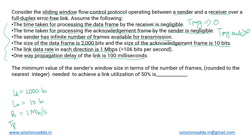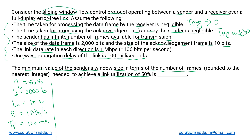The one-way propagation delay of the link, which we refer to as T_p, is given as 100 milliseconds. Using all this data, we want to calculate the minimum value of the sender window size in terms of number of frames to achieve a link utilization of 50%. This is a sliding window protocol, so the window size will be greater than 1 — we'll call it N.